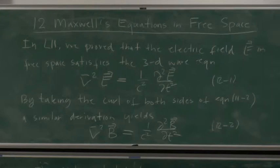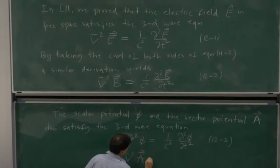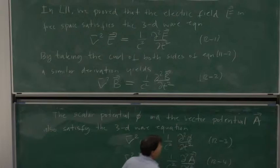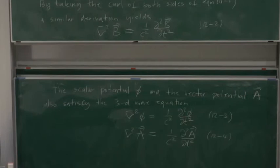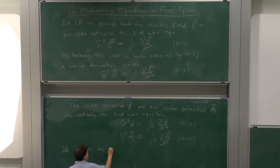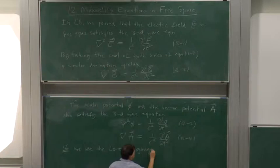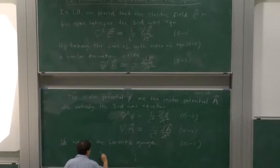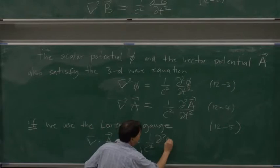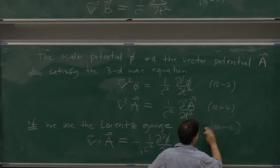By dt squared, let's make this equation 12-3: del squared A equals 1 over c squared, d²A by dt squared — equation 12-4. If we use the so-called Lorentz gauge, del dot A equals minus 1 over c squared, d phi by dt. Let's make the Lorentz gauge equation 12-5.